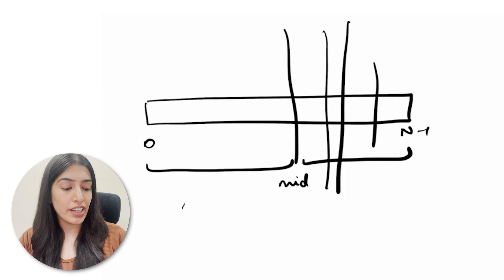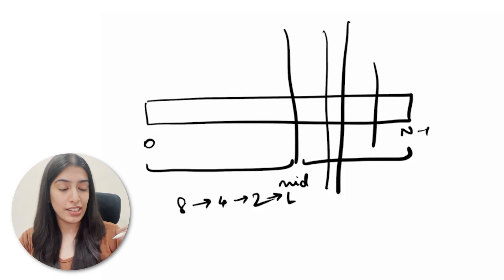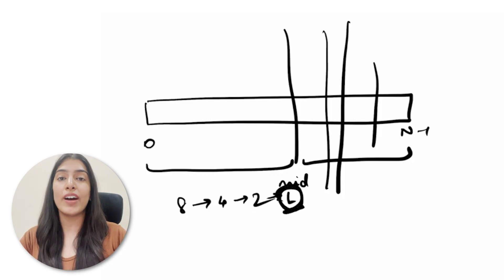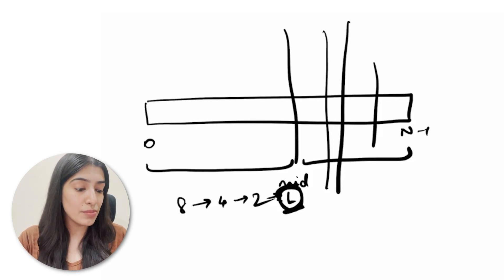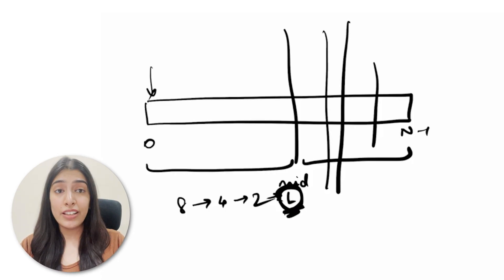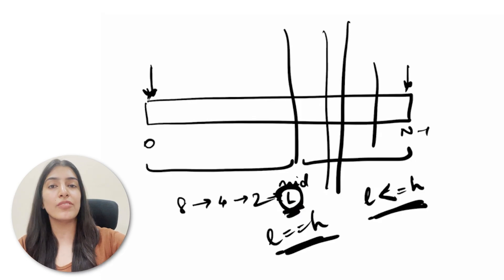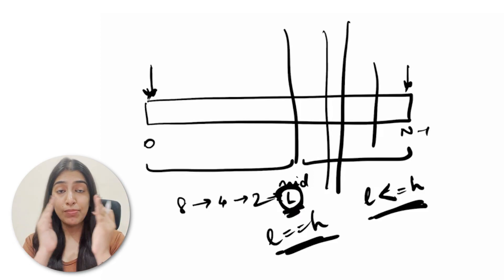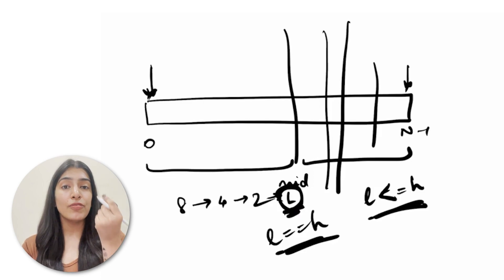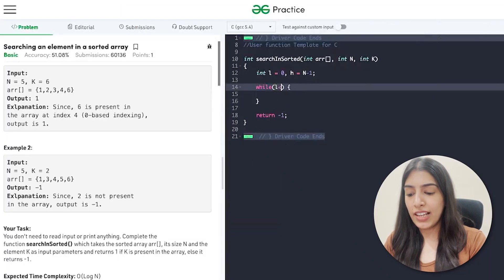Suppose there were 8 elements, then 4, then 2, then 1. Once there is only one element to compare, we can be sure whether it exists or not. We keep searching until the lowest index and highest index become the same — that is, while l is less than or equal to h. When l equals h, if we still haven't found it, we stop.